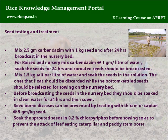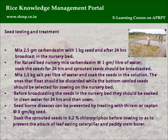Seed testing and treatment: Mix 2.5 grams carbendazim with 1 kg seed and after 24 hours broadcast in the nursery bed. For raised bed nursery, mix carbendazim at the rate of 1 gram per litre of water, soak the seeds for 24 hours, and sprouted seeds should be broadcasted.